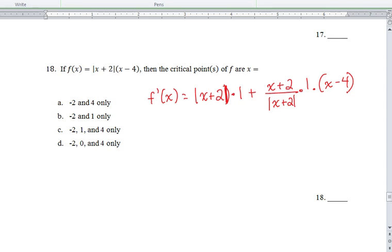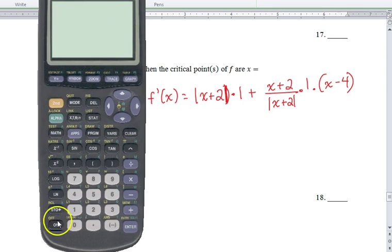Now, technically, if you really wanted to, you could get a common denominator, all that jazz. But really, at this point, if I'm trying to find critical points and it's calculator active, then I'm going to go straight to my calculator and I'm going to look at the graph. So that's the easiest way to do it.